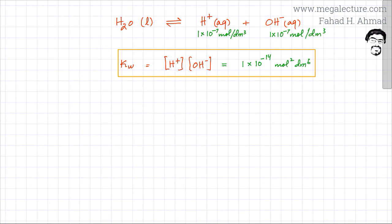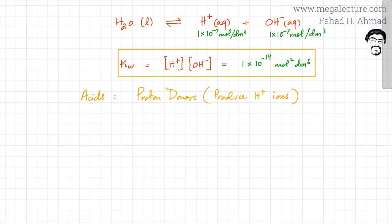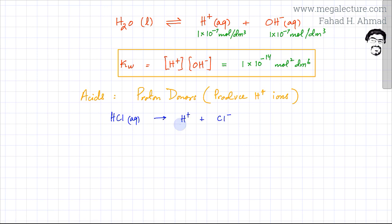Now I'm going to link KW and the water ionization equation with the concept of acids and bases. Acids are defined as species — molecules or compounds — that are proton donors. The term proton refers to H⁺ ions, since H⁺ has only one proton. So acids are compounds that produce H⁺ ions. When you mix an acid into water, it breaks down and produces H⁺ ions. For example, HCl dissolved in water ionizes to produce H⁺ and Cl⁻ ions.